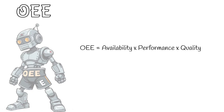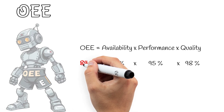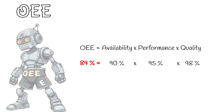For example, if a machine is available 90% of the time, runs at 95% performance, and makes 98% good parts, the OEE is about 84%. In Lean Six Sigma, OEE is critical because it pinpoints equipment losses like downtime, slow cycles, or scrap. It's often tied to the six big losses in manufacturing.